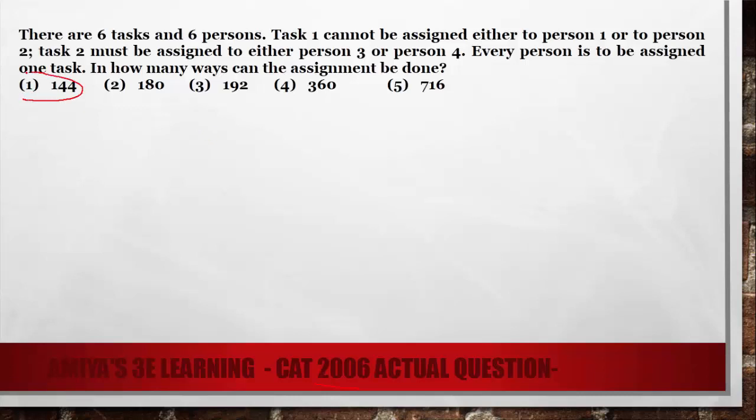Answer of this question is option number 1. How comes? Here we have 6 persons and 6 tasks. Task 1 cannot be assigned either to person 1 or person 2. Task 2 must be assigned to either person 3 or 4. Every person is assigned 1 task.